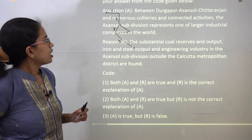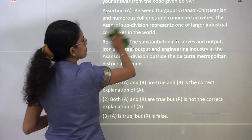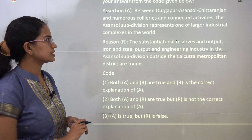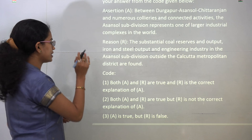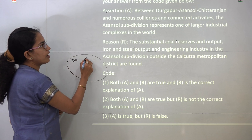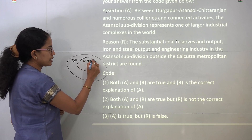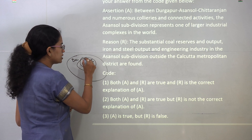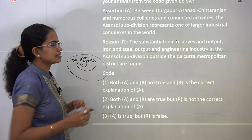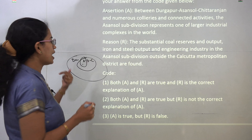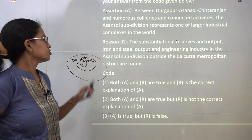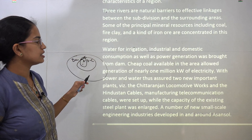Between Durgapur, Asansoul, and Chitranjan, numerous corollaries and connected activities are seen, and the Asansoul subdivision represents one of the larger industrial complexes in the world. Within the Damodar region you have Asansoul, Durgapur, and Chitranjan. Asansoul is a sub-region demarcated by three rivers, with substantial coal and iron reserves and good engineering industries, leading to exemplary urbanization. Both assertion and reason are correct, and reason correctly explains the assertion.